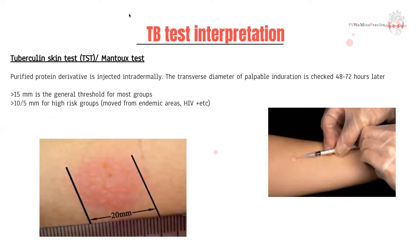The Mantoux test is an immunological-based test where we start by injecting a purified protein derivative of mycobacterium into the skin — usually five units. We then wait 48 to 72 hours and measure the transverse diameter of the raised, indurated, or red inflamed indurated part.